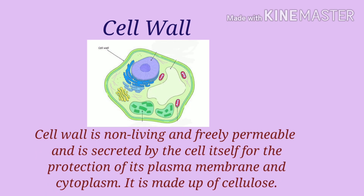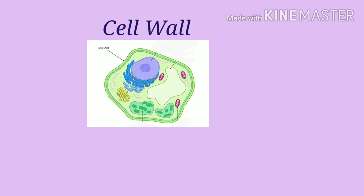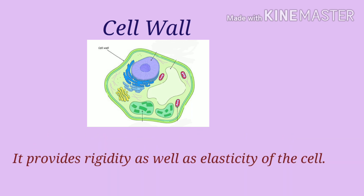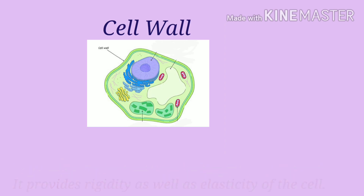In plant cells, there occurs a rigid cell wall which lies outside the plasma membrane. Cell wall is non-living and freely permeable and is secreted by the cell itself for the protection of its plasma membrane and cytoplasm. It is made up of cellulose. Plants are able to bear stress and strain because of the cell wall. It provides rigidity as well as elasticity of the cell.